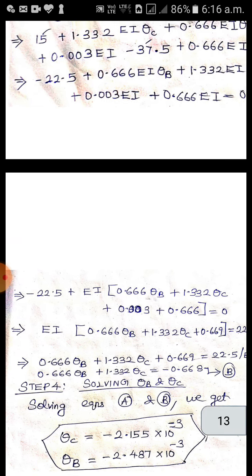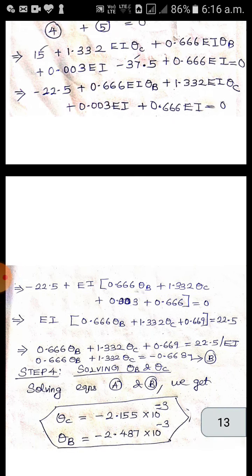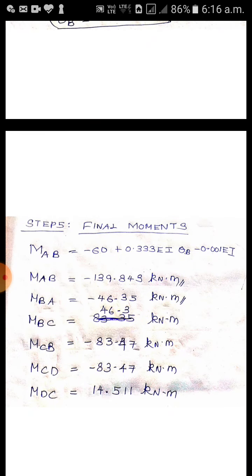So two equations solved by using calculator. As I already told you, A1 X plus B1 Y equal to C1. Second equation is A2 X plus B2 Y equal to C2. Substitute all the values of A1, B1, C1, A2, B2, C2. You won't get EI, directly you will get the answers. So step 4 is solving theta_B and theta_C. Theta_C minus 2.155 times 10 power minus 3, theta_B equal to minus 2.487.